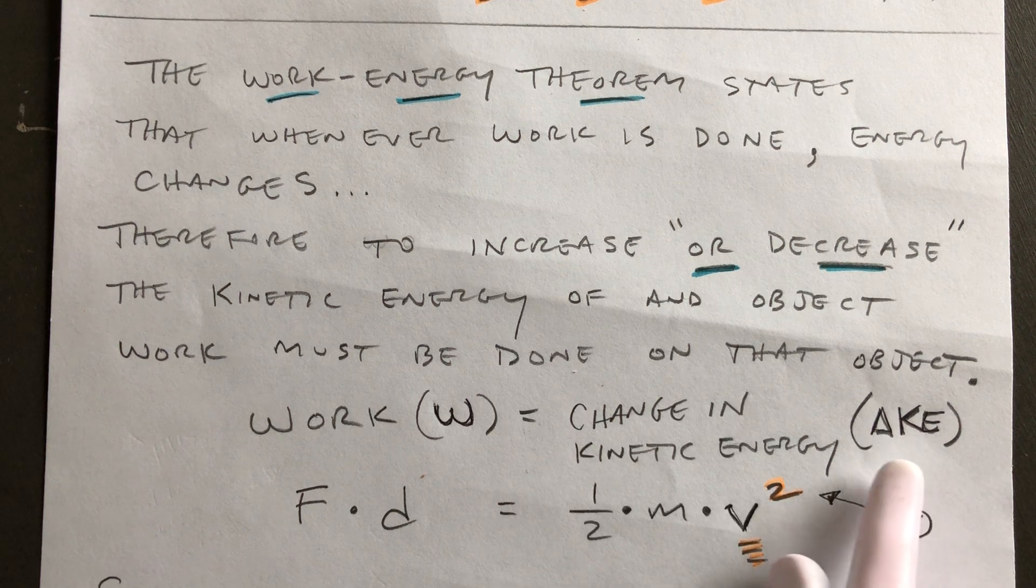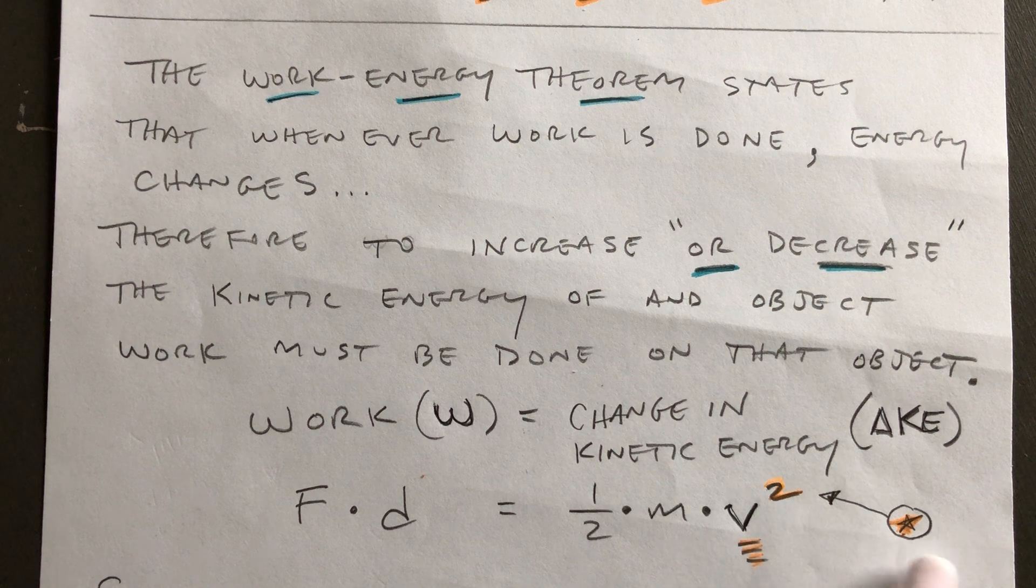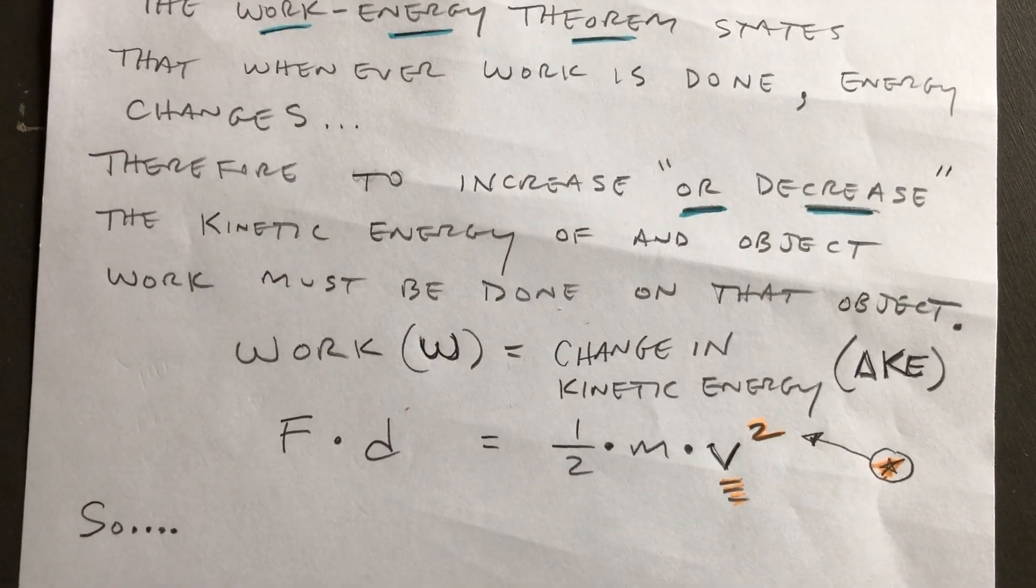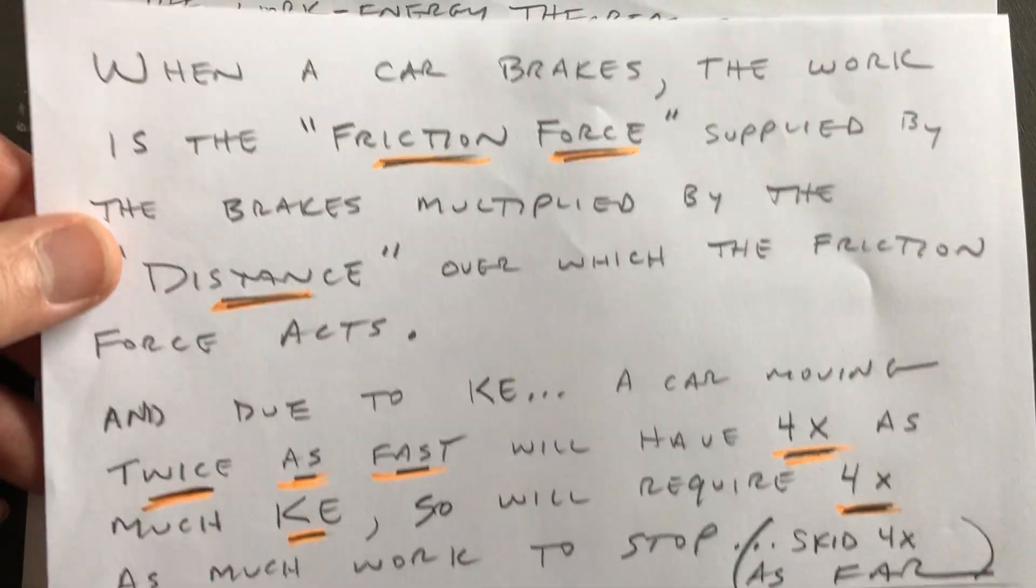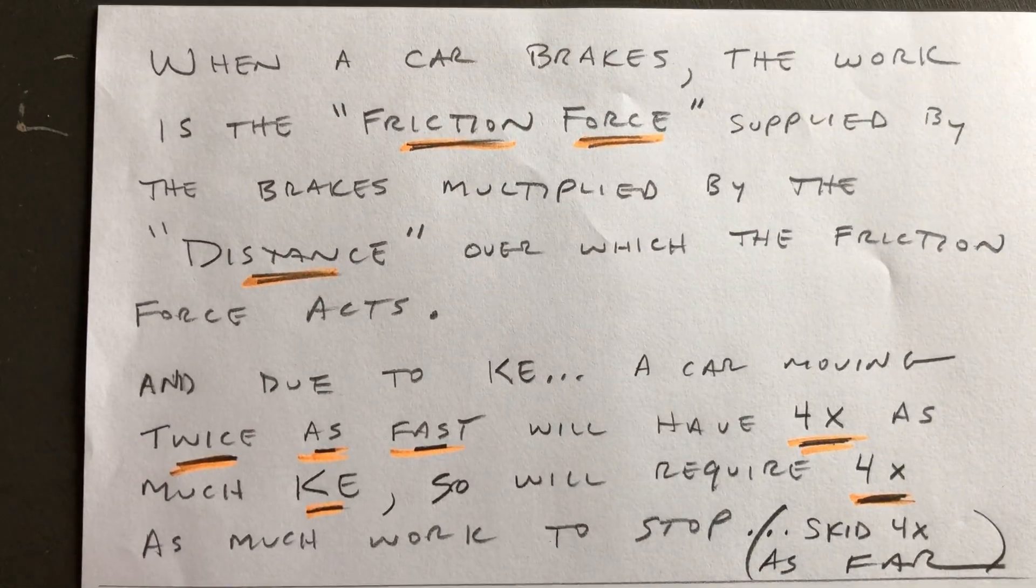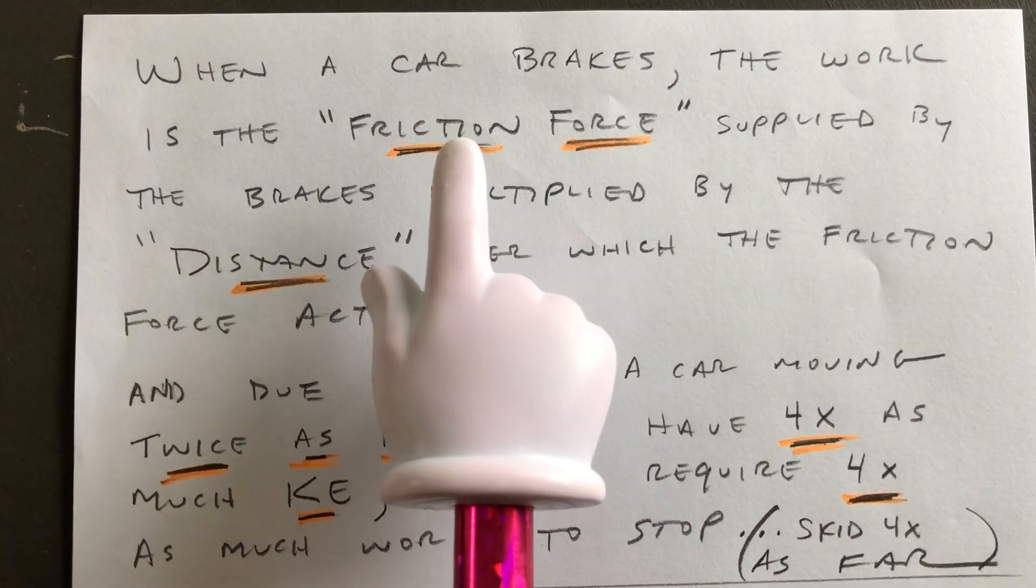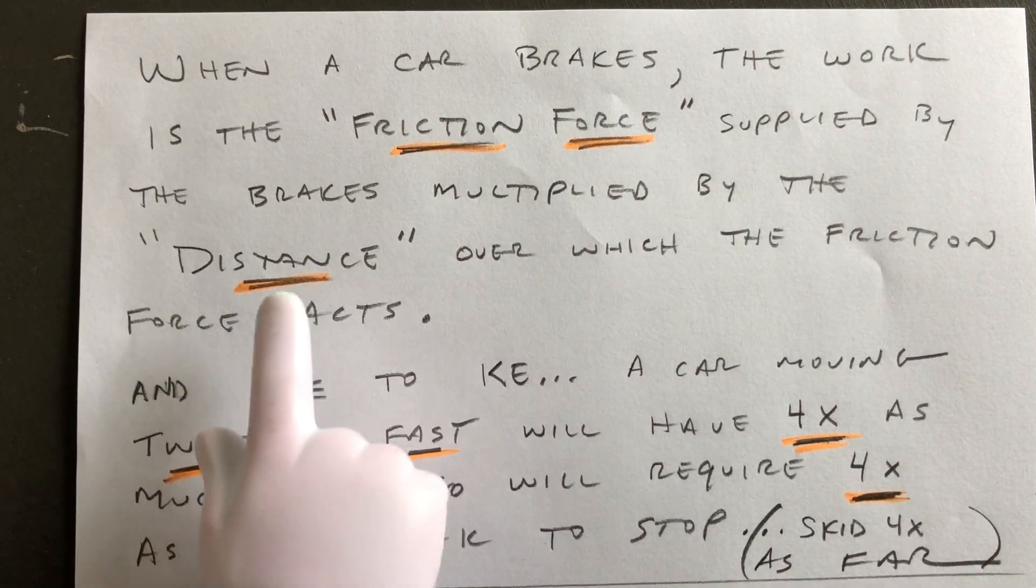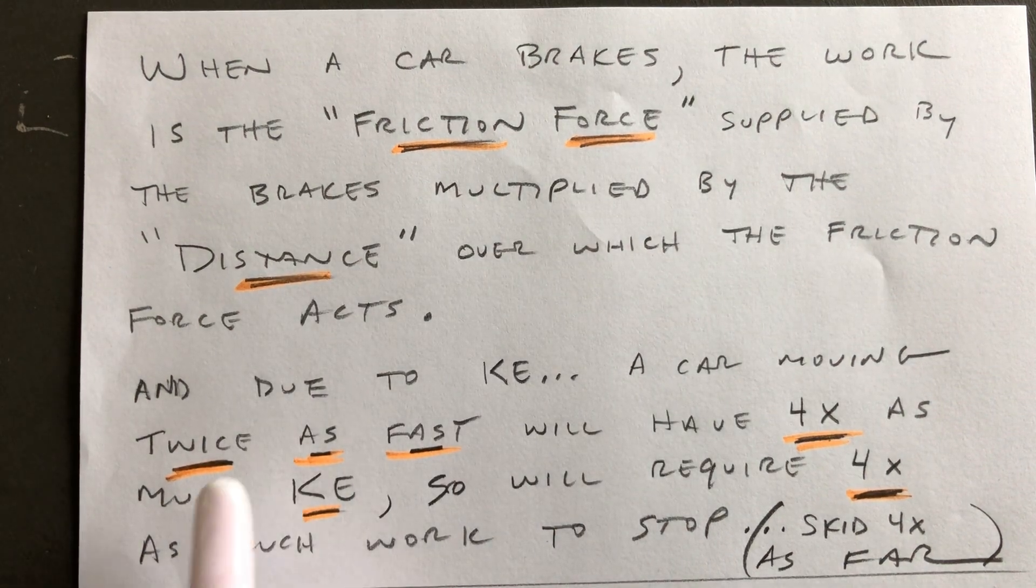Or delta KE, which is one-half m v squared. That's the important part, is velocity squared. So to kind of talk about this idea of what's going on with this skidding distance, when a car brakes, when a car slams on the brakes, the work is actually the friction force supplied by the brakes multiplied by the distance over which the friction force acts. Work equals force times distance.